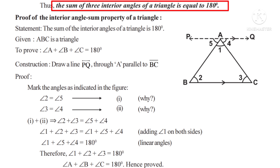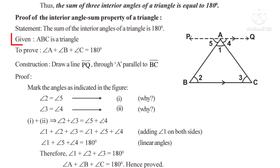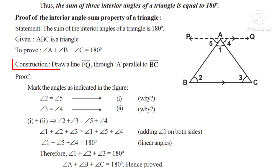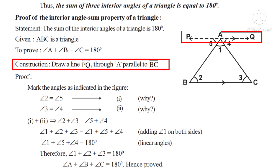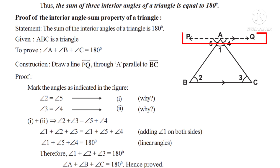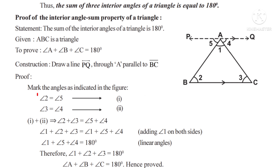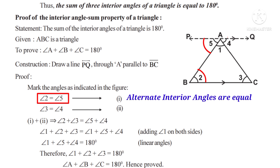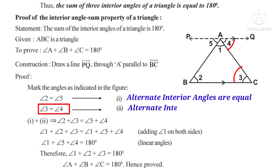Now, let us prove it. Given: ABC is a triangle. To prove that angle A plus angle B plus angle C is equal to 180 degrees. Construction: draw a line PQ through A parallel to BC. So PQ is parallel to BC. Observe that angle 2 is equal to angle 5 (equation 1), because alternate interior angles are equal. Angle 3 is equal to angle 4 (equation 2), because alternate interior angles are equal.